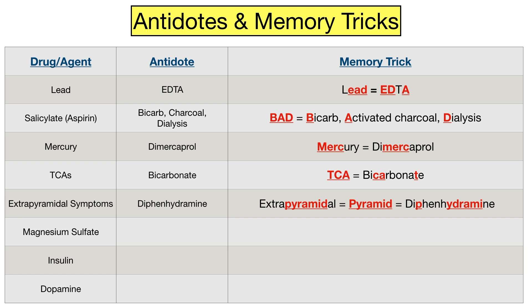Next we have magnesium sulfate. The antidote for magnesium toxicity is calcium gluconate. This is easy to remember because magnesium and calcium end in the same letters and rhyme, and sulfate and gluconate end in the same letters and rhyme.